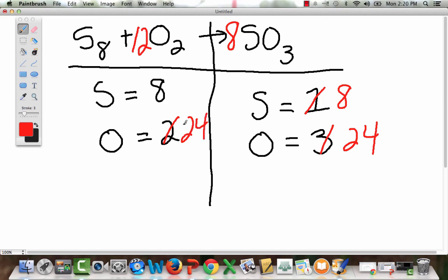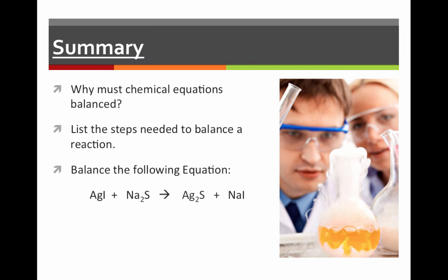8 and 8, 24 and 24. Now, is this 12 going to affect this sulfur? Absolutely not because that plus sign is like a wall. The actual correct answer is right up here. Why must you balance chemical equations? List the steps needed to balance the reaction. And then, I want you to go ahead and try the following equation and see if you can balance it.